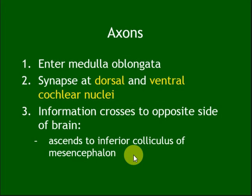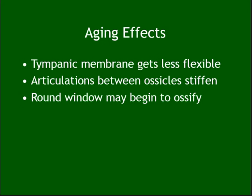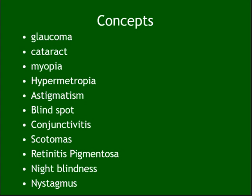Superior colliculus = eye movement; inferior colliculus = hearing. Hearing range is greater in children than in adults, and the range decreases as you grow. With aging, everything deteriorates: the ossicles become stiff, the round window ossifies, and movement declines.